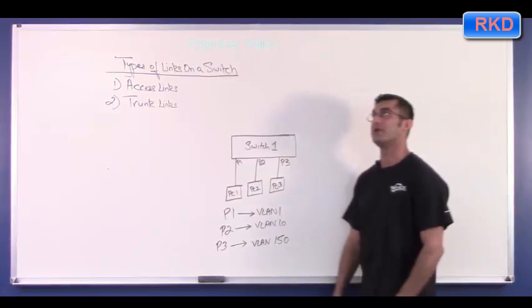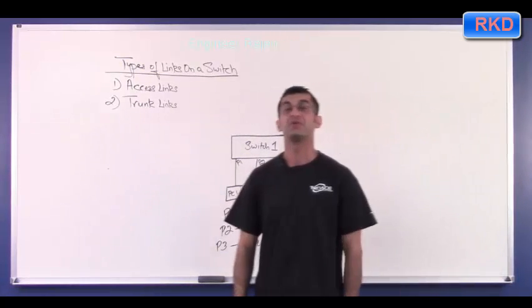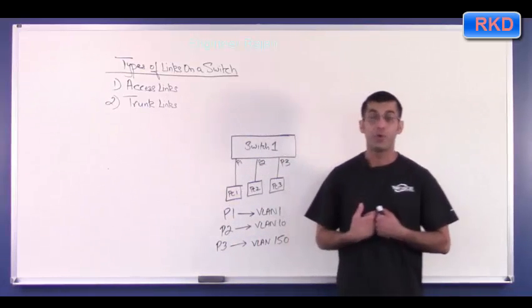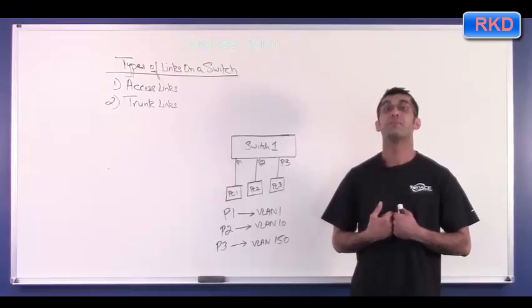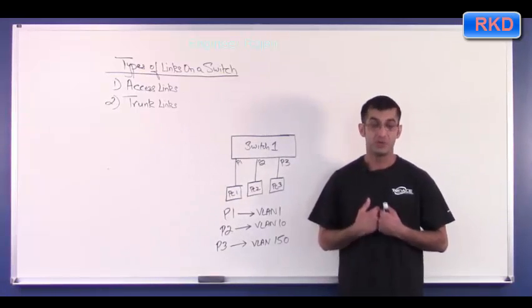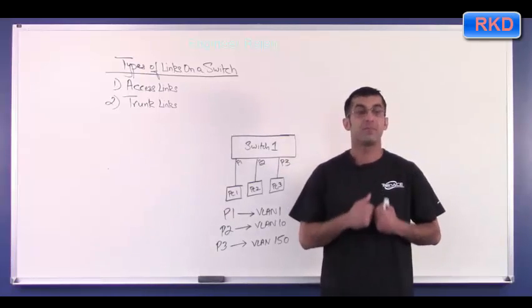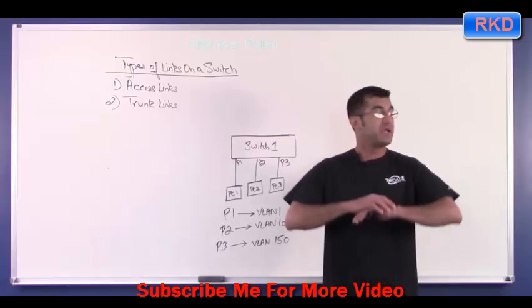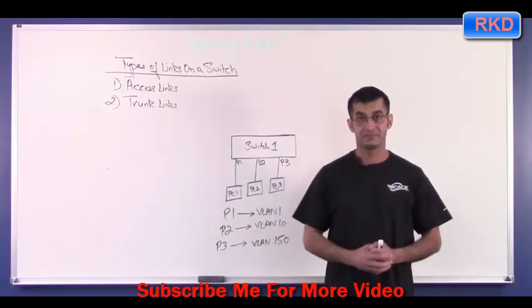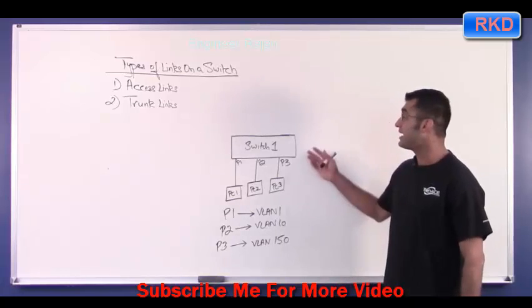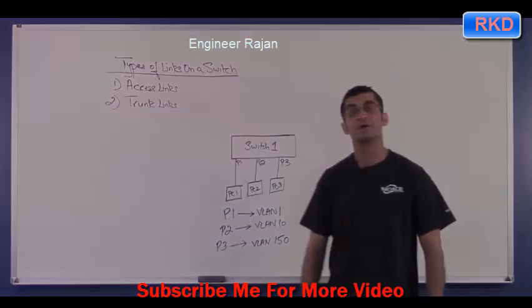So when I ask somebody to go put a device in a certain VLAN, what I'm actually saying is, look up the port that device is connected on and put that port in that specified VLAN. So when you create a VLAN and then you put a port inside of a certain VLAN, the device connected at the end becomes part of that VLAN. I am going to show you how to actually create access links on a switch.